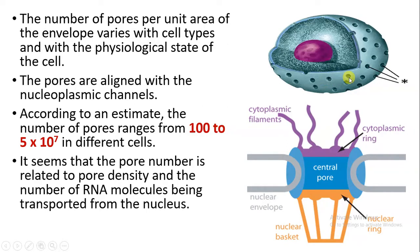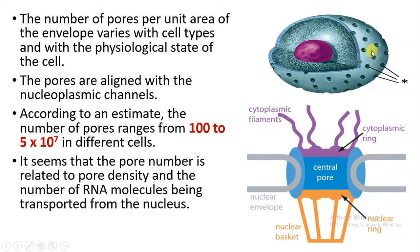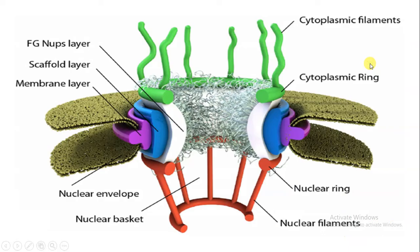It is estimated that the number of pores present in the nuclear membrane ranges from about 100 to 5×10⁷ in different cells. The pore number is related to pore density: if the transportation of molecules from nucleus to cytoplasm and cytoplasm to nucleus is more, then the number of nuclear pores is going to be more, and if the transportation is less, then the nuclear pore number is also going to be less.